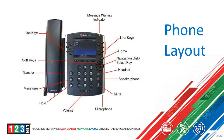Your home button is the next button. This is where you would access your main menu with things such as directory, recent calls, and other options of the phone. To navigate that menu, you would use the navigation disk below that, and to select any of those options, you would simply press the select key in the middle of that navigation disk.